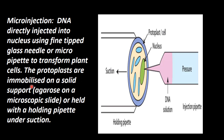The protoplasts are immobilized — they cannot move — on a solid support. This is inside the agarose gel. Agarose is a gel on a micro-pipette slide. Agarose solid flakes are dissolved in water and some salts, heated and made thick. The cells are held with the holding pipette under suction.